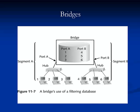Bridges belong to the data link layer of the OSI model. They can make decisions about where to direct data based on the MAC address in the data frame's header. A bridge keeps a filtered database so that it knows to discard a packet if it belongs to the same segment from which it was issued, or forward it to another segment. Bridges have one input port and one output port and can separate a network into two different collision domains.